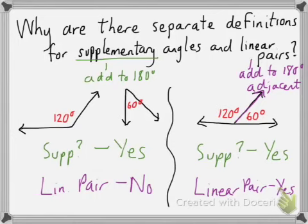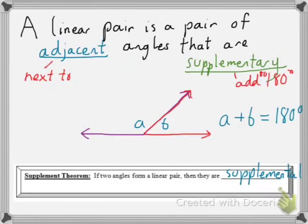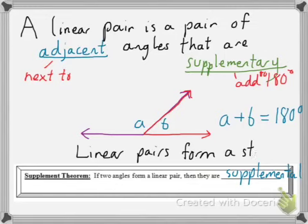Consider also this alternate way to describe a linear pair. We could say that because there's no other way to draw supplementary angles that are adjacent and not having them make a straight line, we could say that linear pairs are two angles that form a straight line.